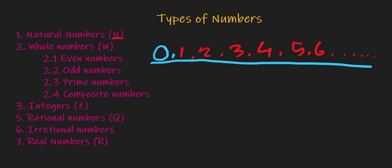The first type is even numbers. What are even numbers? If a number is divided by 2 without any fraction, these are even numbers.